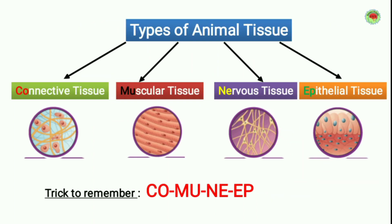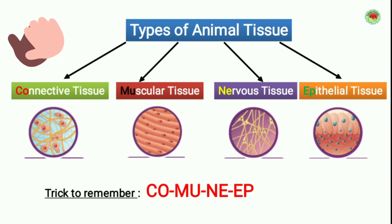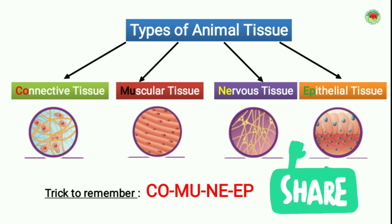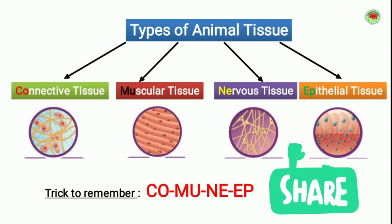There are four types of animal tissue: connective, muscular, nervous, and epithelial. For connective, use 'co'; for muscular, 'mu'; for nervous, 'ne'; and for epithelial, 'ep'. Combining these letters gives the word COMMUNIB — that's the trick to remember the four types of animal tissue.